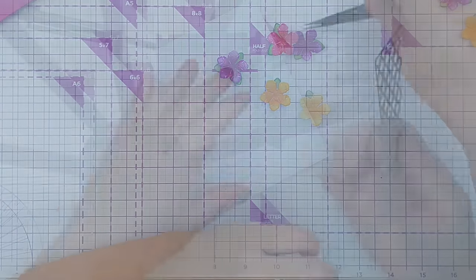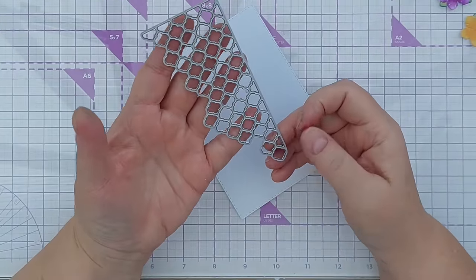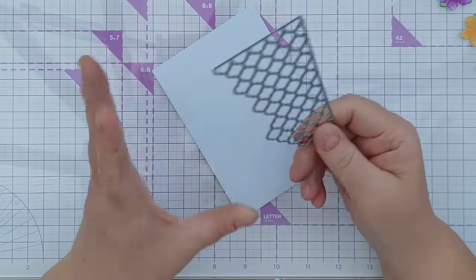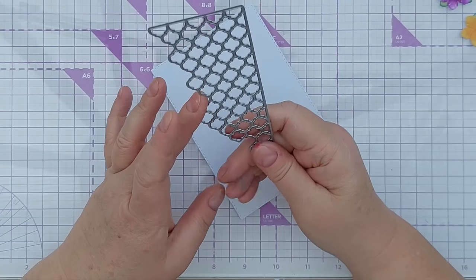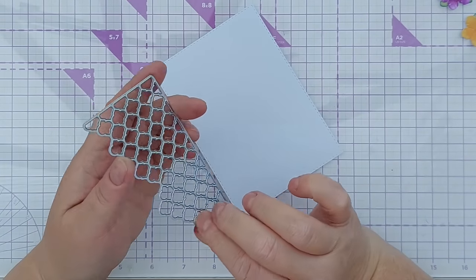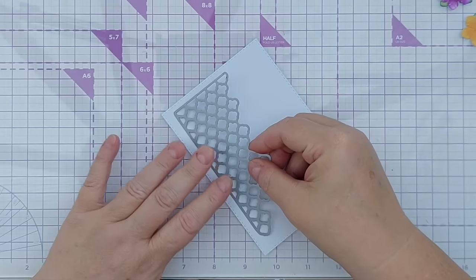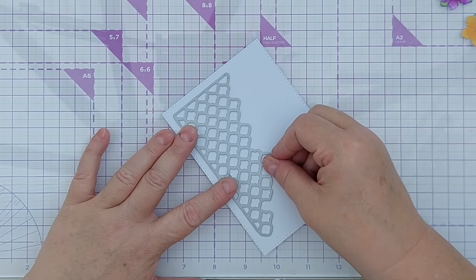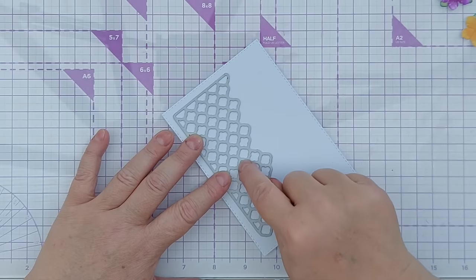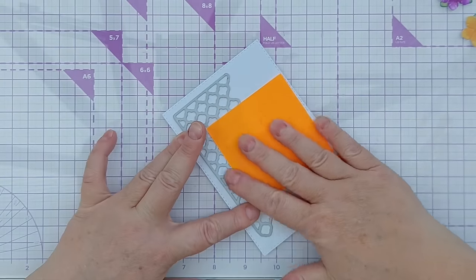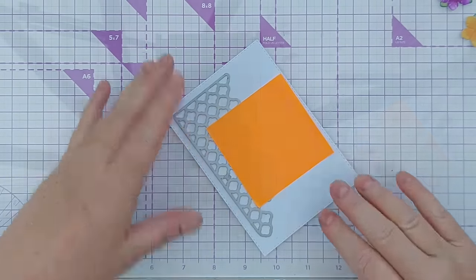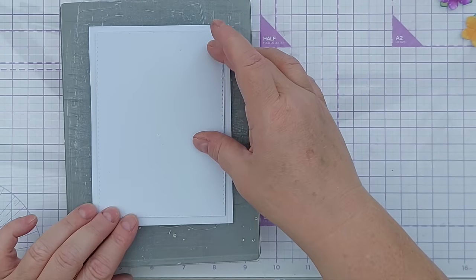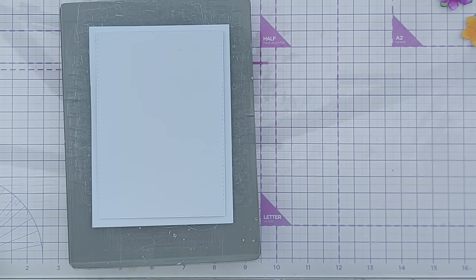I've got here a die that cuts this lovely kind of Moroccan tile aperture in a card panel. This is a very old die from The Works. I don't think they sell it anymore, but you might be able to find it somewhere like eBay. I want to put this here on this stitched rectangle panel that's going to be the front of my card and cut an aperture in it. Hold it in place with some sticky note, put this bit of card here to protect the front of my card panel from the scratches in my cutting plate, and then run it through my CuttleBug.